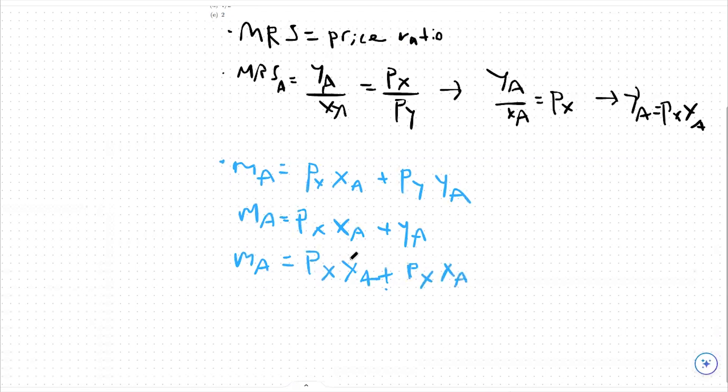So we can say MA is equal to px xA plus px xA. So it's really just 2px xA.